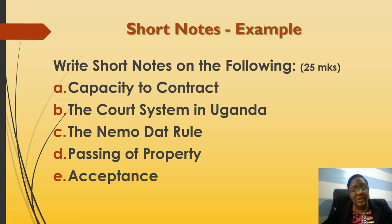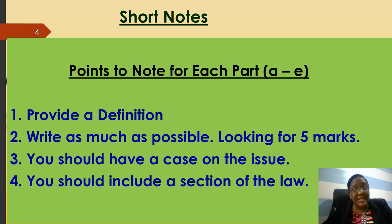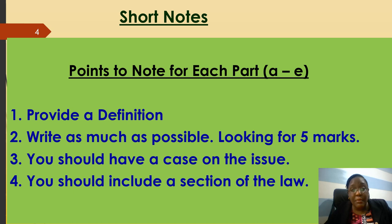Some things you need to look out for in short notes: as you're writing, you should at least provide a definition — a definition will earn you a mark for whatever issue you're talking about. Write as much as possible because you're looking for five marks for each point. You also have to have a case for each short note. For example, if part A is about passing of property, you need cases on passing of property and examples of what happens when property is passed.